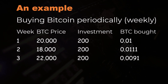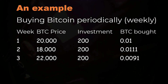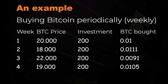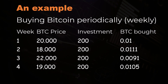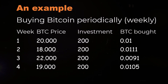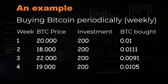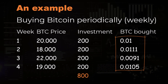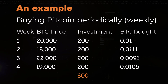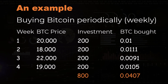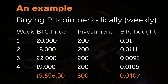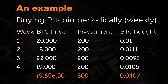In week 3 the bitcoin price is $22,000 and still you buy for $200. And in week 4 you have a $19,000 bitcoin price, you still buy for $200, which gives you a corresponding amount of BTC. At the end of the 4 weeks we have invested $800 in total. We bought these amounts of BTC each week, which resulted in slightly above 0.04 BTC. Now if we divide the $800 invested with this amount, then we get an average price of $19,656.50 per BTC.